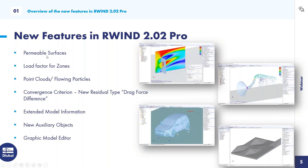The first new feature is permeable surfaces. These are surfaces with a pressure condition where you can simulate a pressure drop on the backside of the surface to reduce the wind speed. This is useful where you have a textile membrane or something which is not fully closed, but also not fully open.